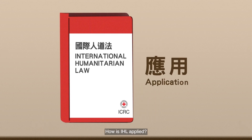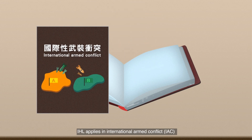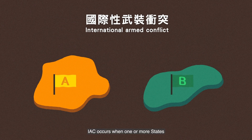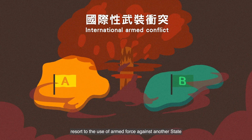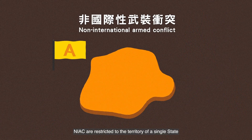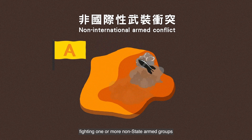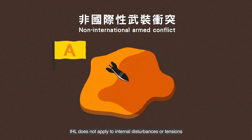How is IHL applied? IHL applies in international armed conflict and non-international armed conflict. IAC occurs when one or more states resort to the use of armed force against another state. N-IAC are restricted to the territory of a single state and involve either governmental armed forces fighting one or more non-state armed groups, or such groups fighting each other. IHL does not apply to internal disturbances or tensions.